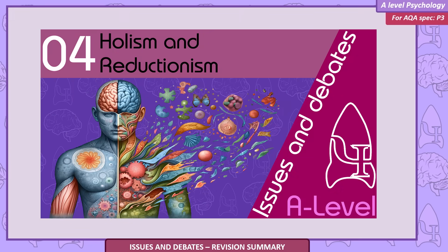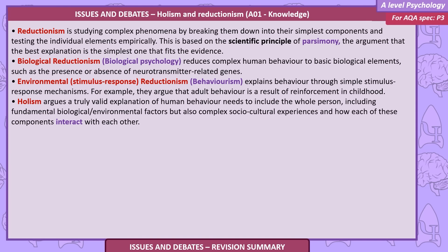Holism and reductionism. Reductionism is studying complex phenomena by breaking them down into their simplest components and testing the individual elements empirically. This is based on the scientific principle of parsimony — that the best explanation is the simplest one that fits the evidence. Biological reductionism, associated with biological psychology, reduces complex human behaviour to basic biological elements such as the presence or absence of neurotransmitter-related genes.